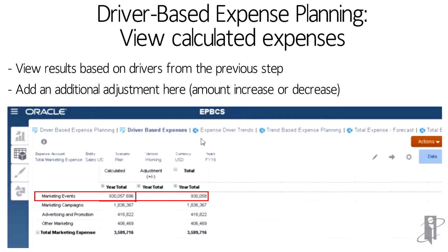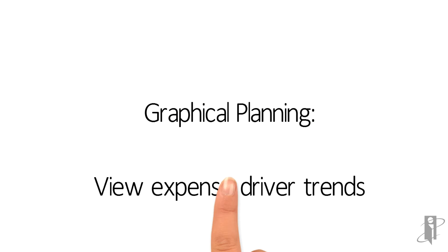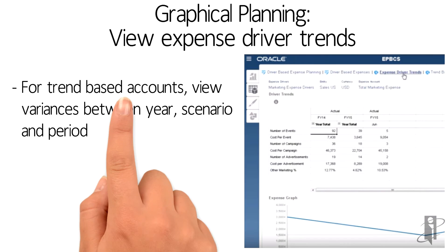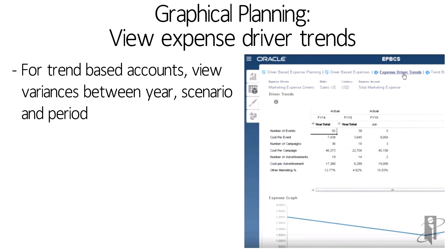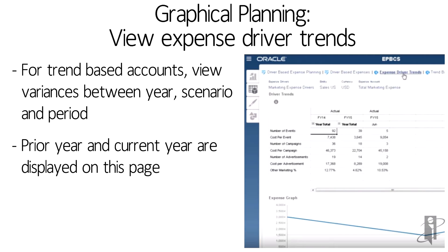In my case, you'll notice I have marketing events of about $930,000. I could then adjust that — either increase or decrease. Maybe I need my marketing budget to have another $50,000 in marketing events I know are going to occur but I don't know where they're going to occur. I could adjust those either up or down. Graphical planning helps you understand how something is trending — in my case, marketing expense. Am I increasing my number of events? Am I decreasing? Am I increasing my cost per event? We can see both prior year and current year to help us understand whether we're bending our cost curve down and adjusting the appropriate drivers.